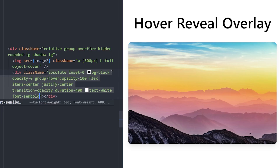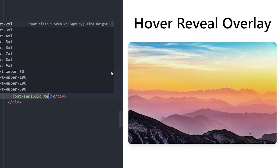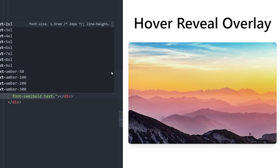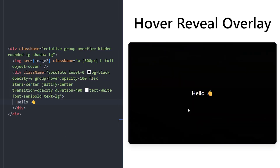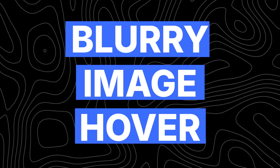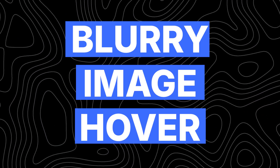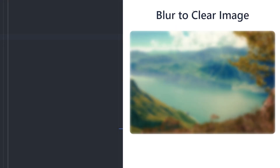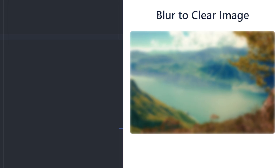Use transition-opacity for the hover effect with duration 400, text white, increase the font size. Add the text inside — and as you can see it works perfectly.